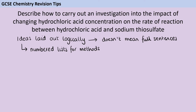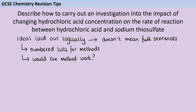The other thing you should be aware of is that for these level-marked questions about the method for an investigation, level three usually says something about the investigation leading to valid outcomes that would actually answer the question. So in other words, will your method actually work? When you've finished, read through and check: have you missed out any step of the method? And have you talked about changing the independent variable and doing the whole thing again? Otherwise you won't have any data to compare.